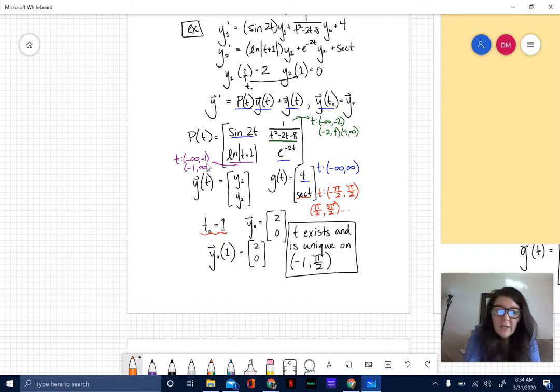We can't take the natural log of zero, so that causes our only domain issue. For e to the negative 2t, like sine of 2t, our interval for t is negative infinity to positive infinity. Remember we're not just looking at P(t).